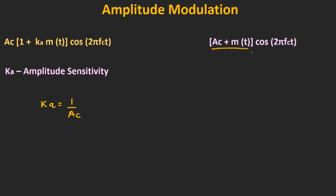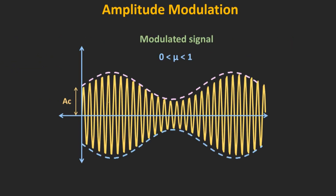Here, m(t) is the message signal and Ac is the amplitude of the carrier signal. That means the envelope signal is Ac plus m(t). For the envelope detector, the shape of this envelope is similar to the shape of the message signal. So if we can recover this envelope of the AM signal, then we can recover the message signal. That is the idea behind the envelope detector.